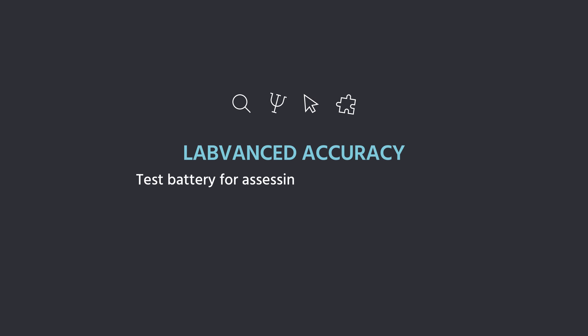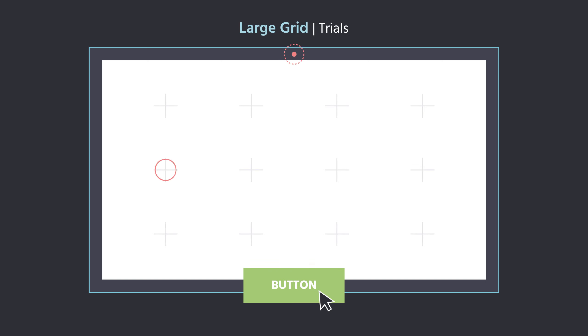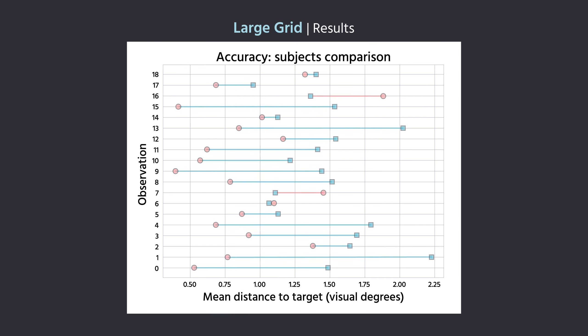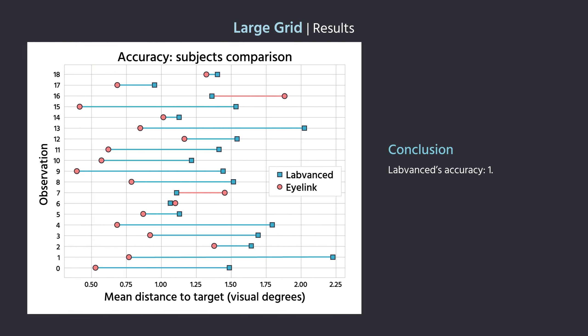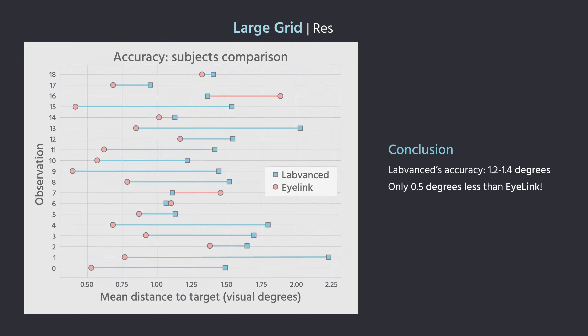To assess Labvanced accuracy, we conducted a study using a specific test battery and compared the results with EyeLink, an accurate but costly eye tracker. During the Large Grids task, the participants performed forced fixation, where they were prompted to look at a specific spot and indicate exactly when the red circle disappeared by clicking a button. We calculated the difference of the eye tracking predicting where the participant was looking and where the target actually was, and found that our accuracy is between 1.2 and 1.4 degrees, a difference of 0.5 degrees when compared with EyeLink's predictions.